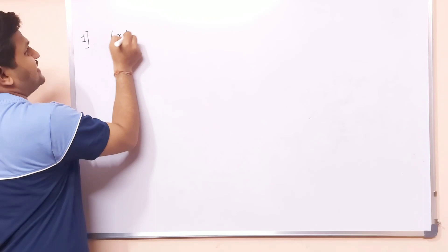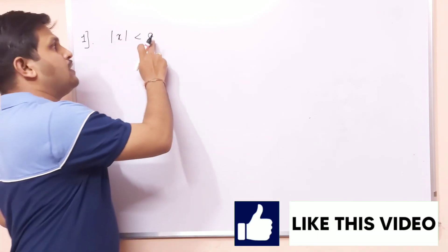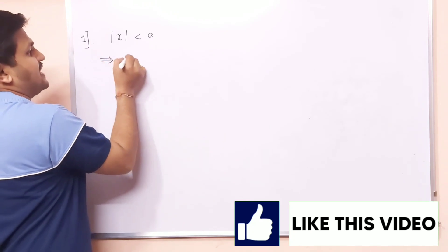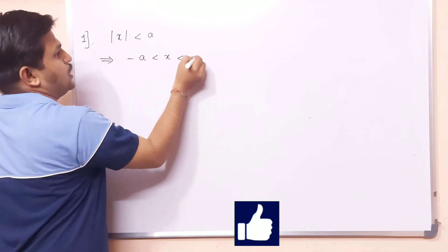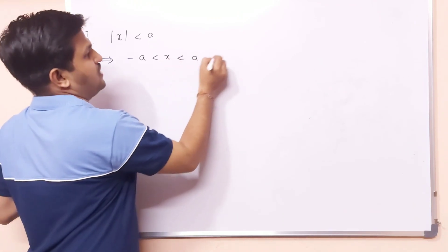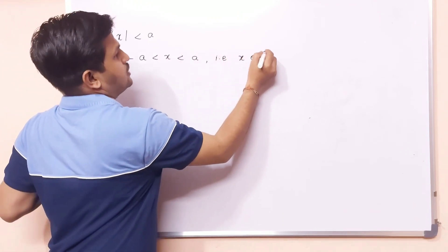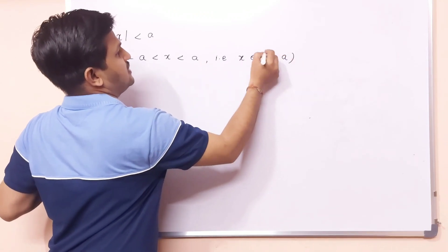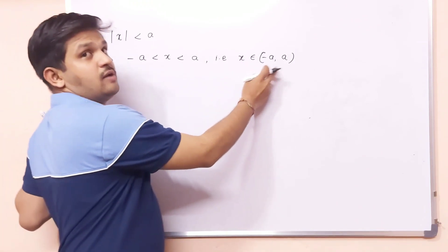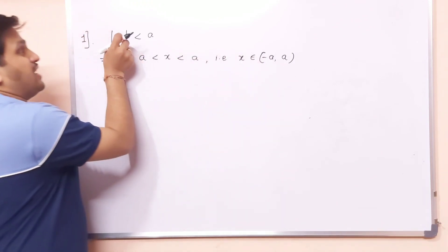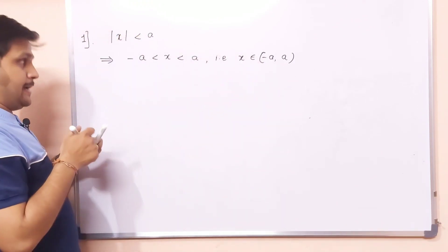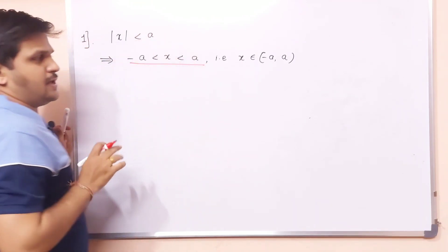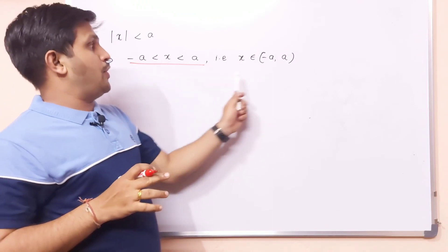First important remark: when |x| < a, where a is some real number, this implies x belongs to the open interval (−a, +a). Because it is strictly less than, it should be the open interval −a to +a. Whenever the mod function is less than a, x lies between −a and +a.